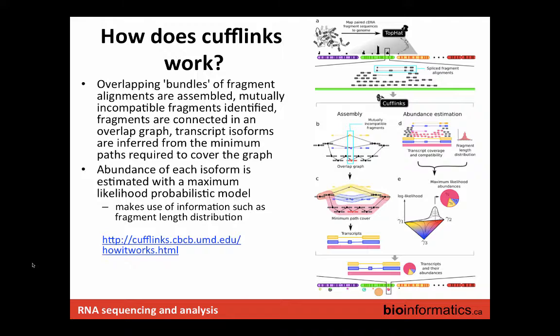Cufflinks provides a figure in their paper that summarizes how it works at a high level. They take the mapped alignments or fragments, construct bundles of overlapping fragments, look for mutually incompatible fragments, connect fragments in an overlap graph, and then infer the isoforms from the minimum paths required to walk through that graph. Once you have those paths, they do fancy probabilistic statistics to assign expression estimates for each isoform defined by these paths.